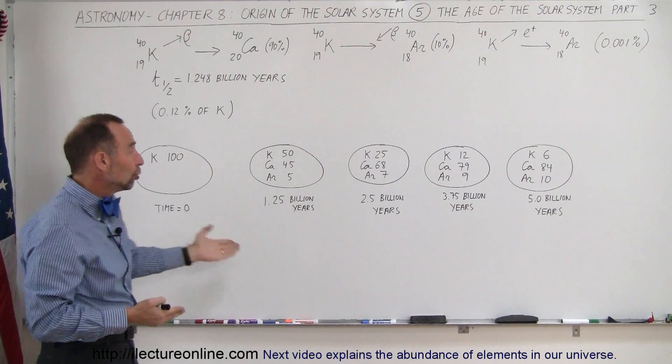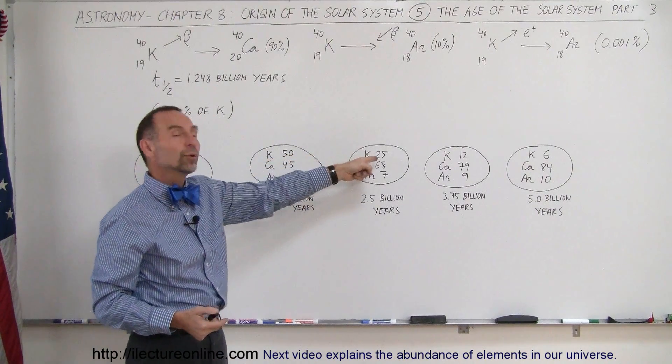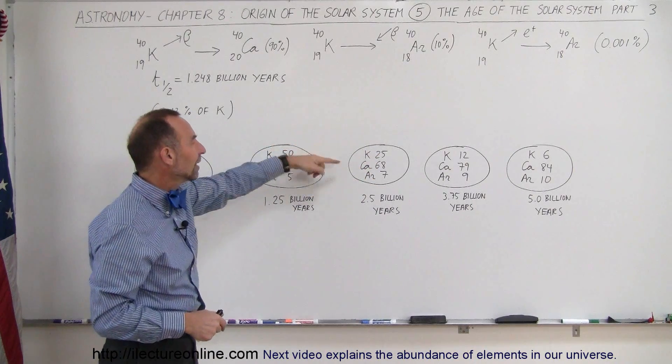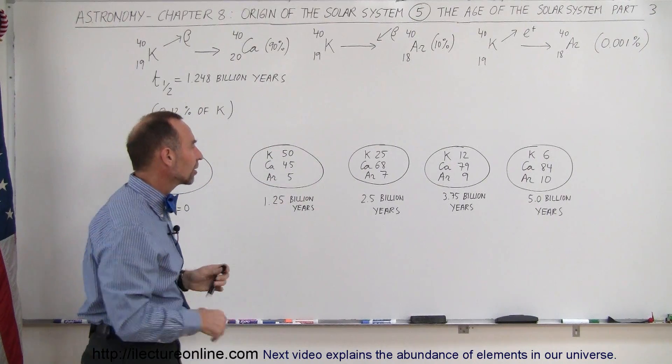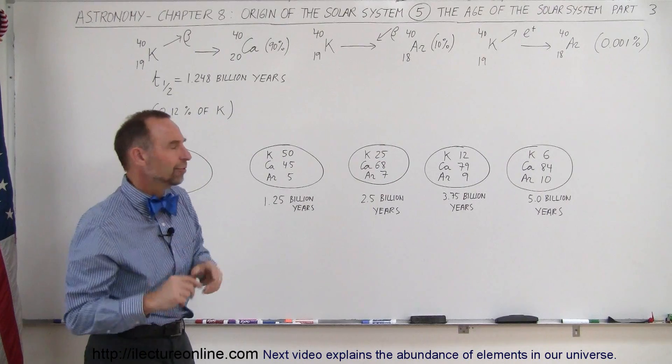After another half-life, 2.5 billion years, of the remaining 50%, half of it will decay, so now you only have 25% left. And since 90% turns into calcium and 10% turns into argon, you now have 68% calcium and 7% argon. Those are rough numbers.